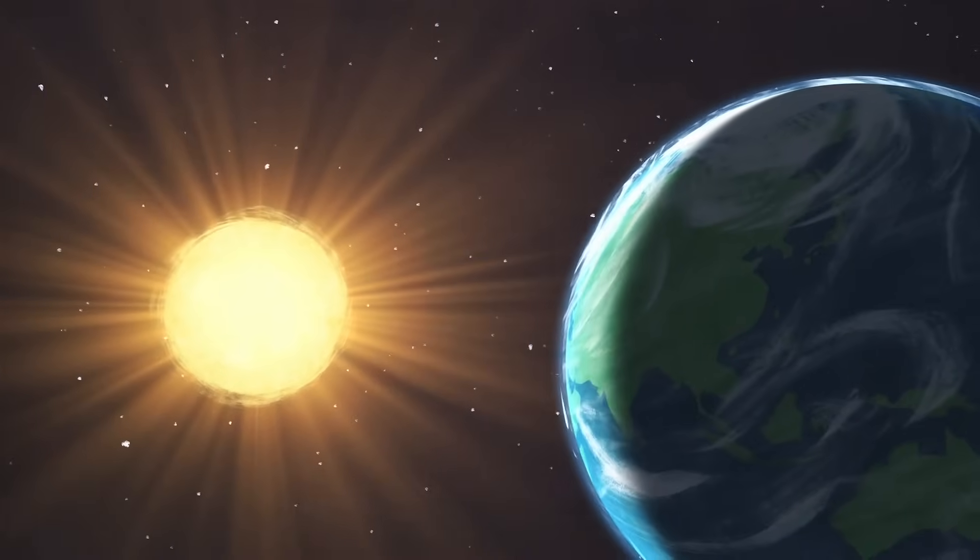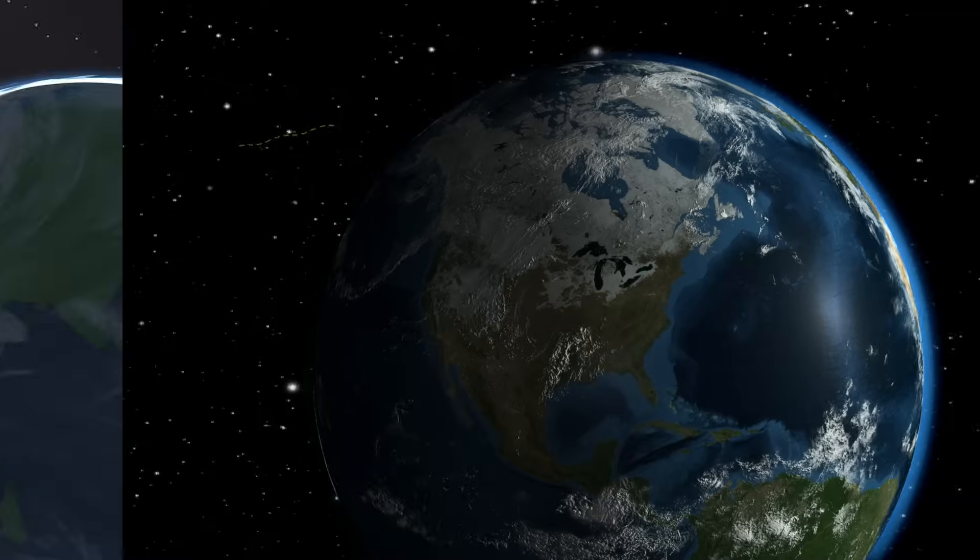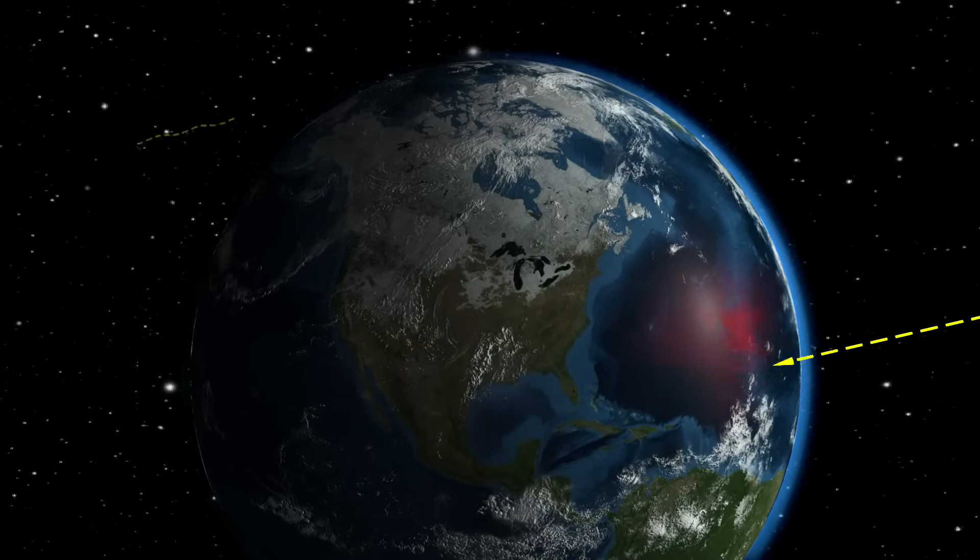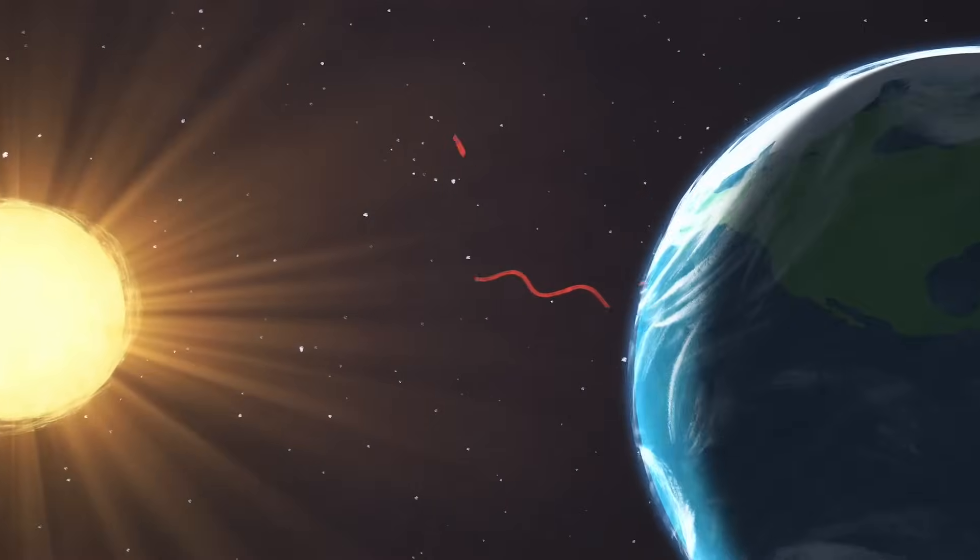The sun pumps out energy in all directions, 24-7, and Earth soaks it in every day. Some of that energy gets absorbed by the oceans, the land, the atmosphere, and some gets reflected back out into space.